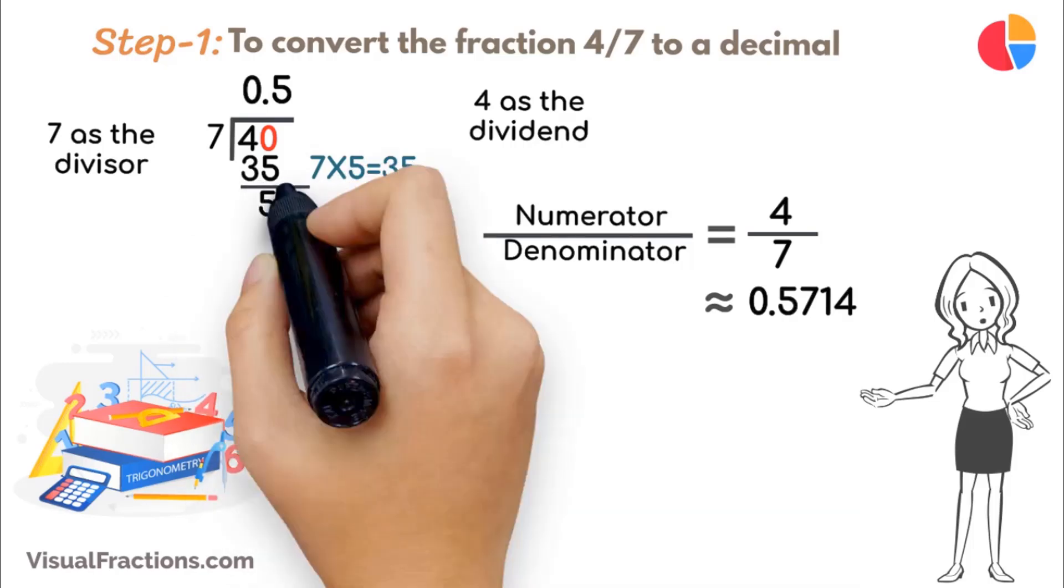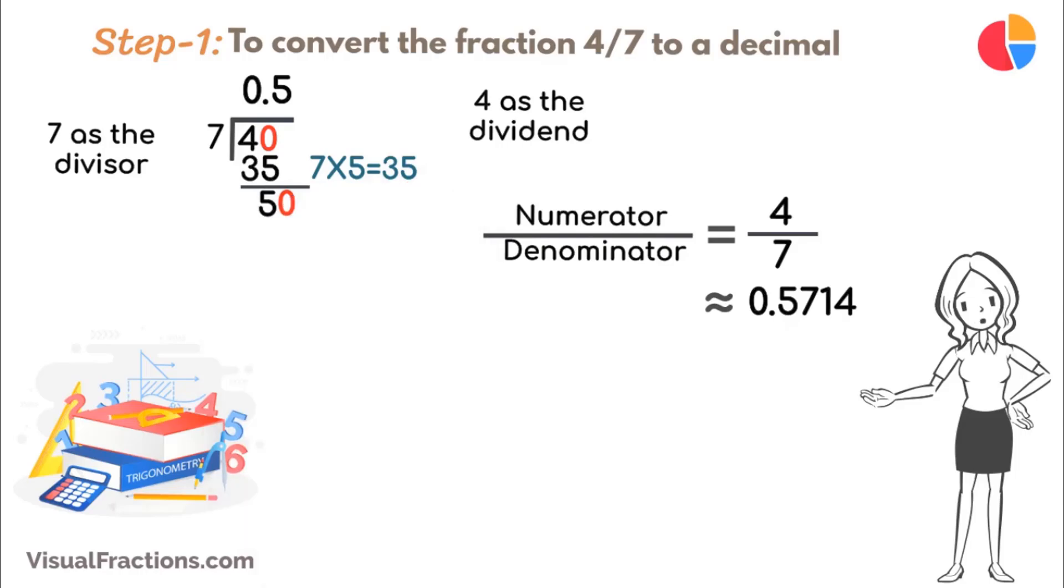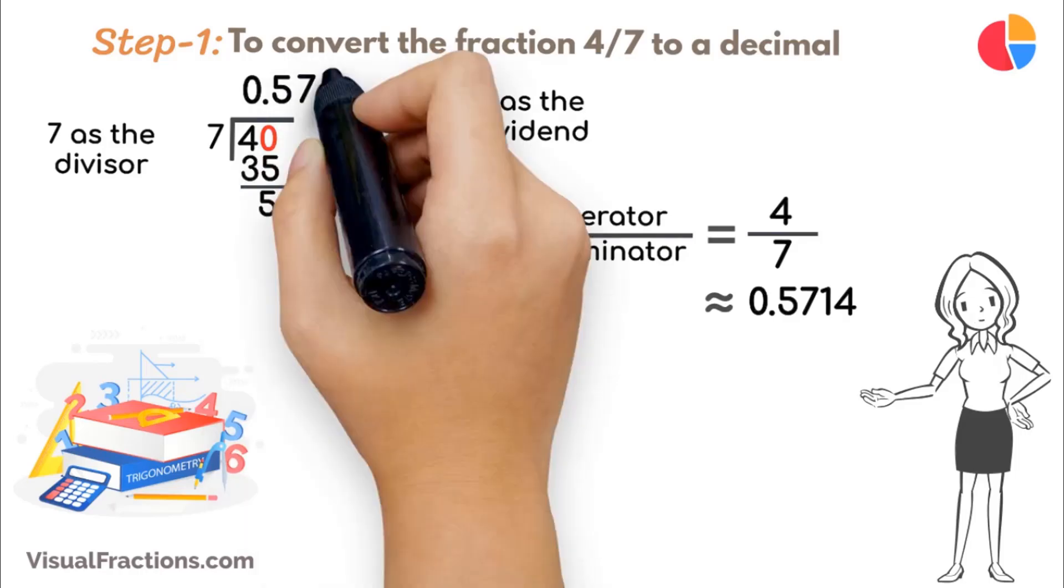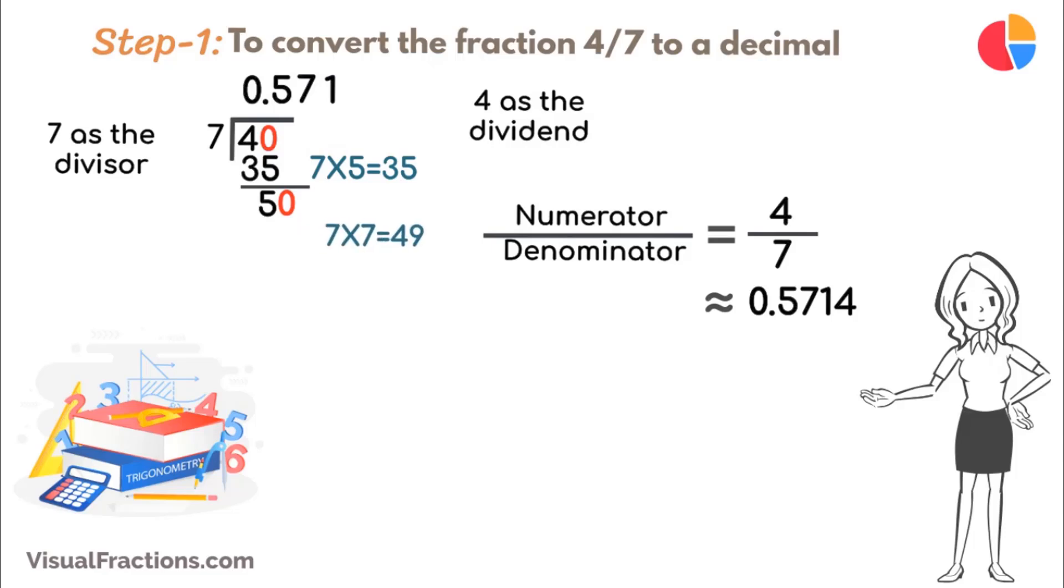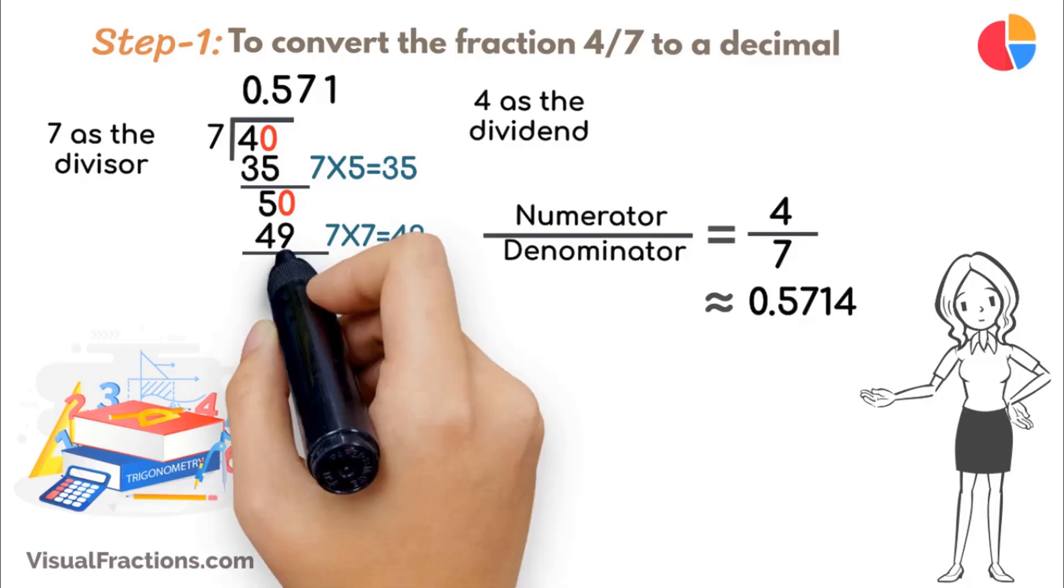Next, bring down another 0 to make it 50. 7 goes into 50 seven times, updating the quotient to 0.57. Multiply 7 by 7 to get 49, and subtract this from 50, leaving a remainder of 1.